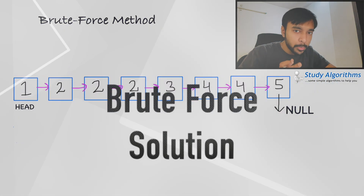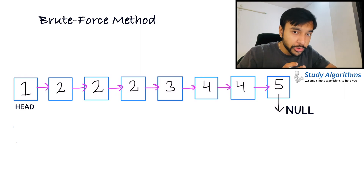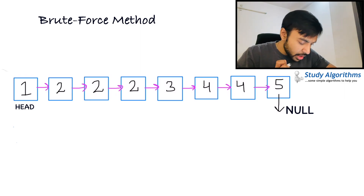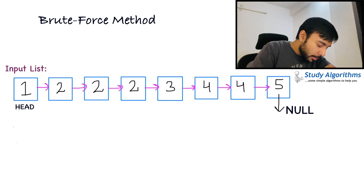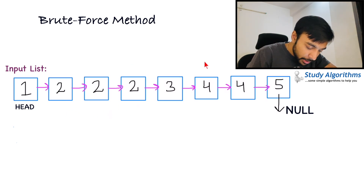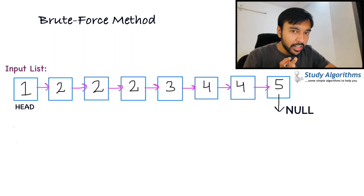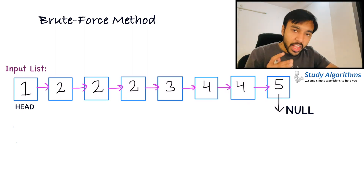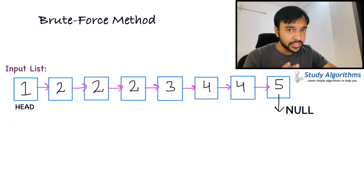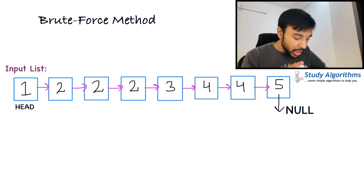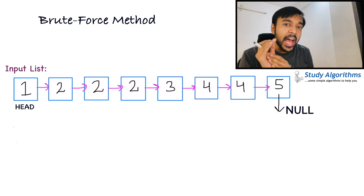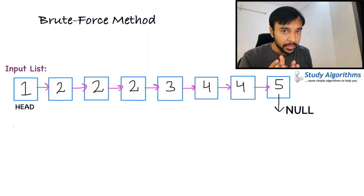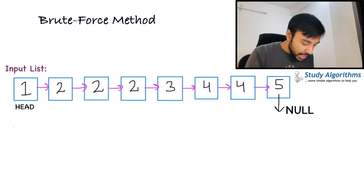A good developer always tries to come up with a brute force solution first. That is because a brute force solution can guarantee you if a solution to a problem even exists. So let us say you are given the sample linked list and you have to remove duplicates from it. You can see that the element 2 is duplicated and the element 4 is duplicated. You need to find a way that in your output list you do not have any duplicates. One way you can approach this problem is by using a set data structure. The speciality of a set is that it will only have unique elements.